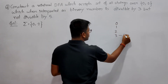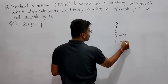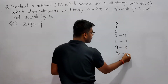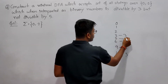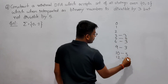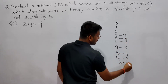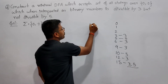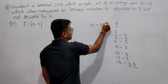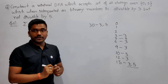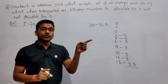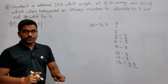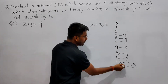So if you look at numbers: 3 is divisible by 3, 6 is divisible by 3, 9 is divisible by 3. Then 10 is only divisible by 5, 5 is only divisible by 5. Now 12 is divisible by 3, then 15 is the number which is divisible by both 3 and 5, and 30 is also divisible by both 3 and 5. So you have to construct a minimal DFA which accepts strings divisible by 3 but not by 5. 15 is the number divisible by both.